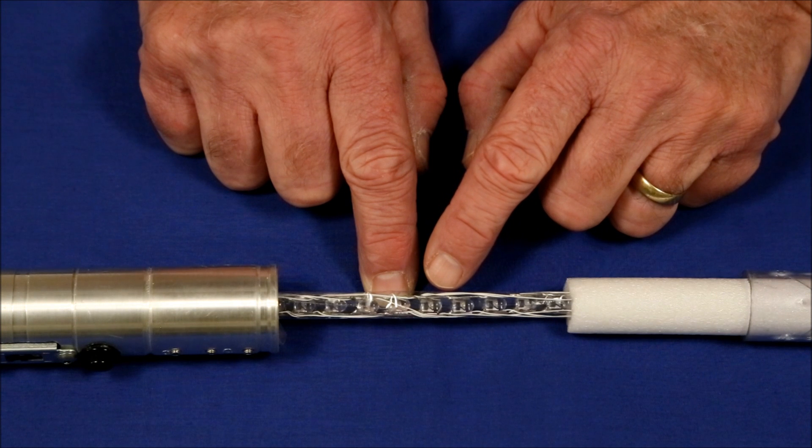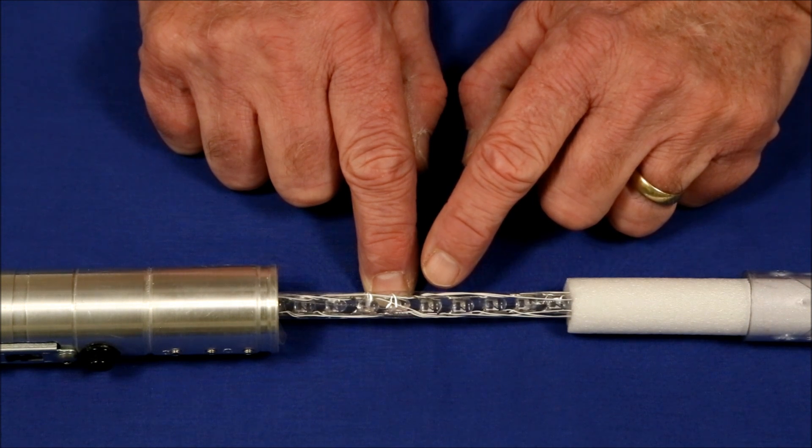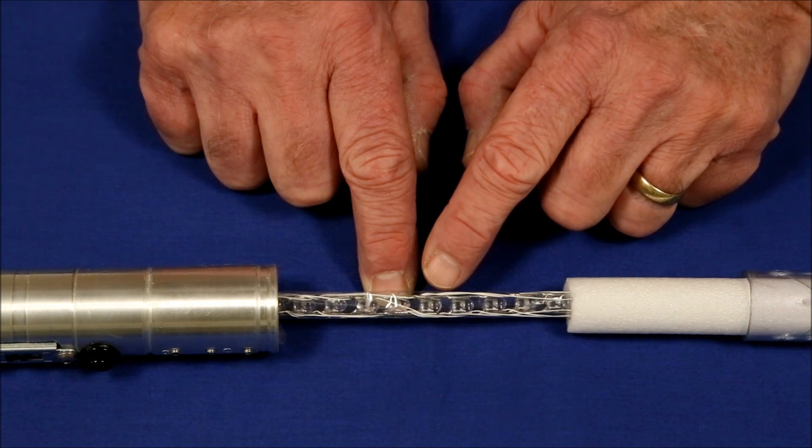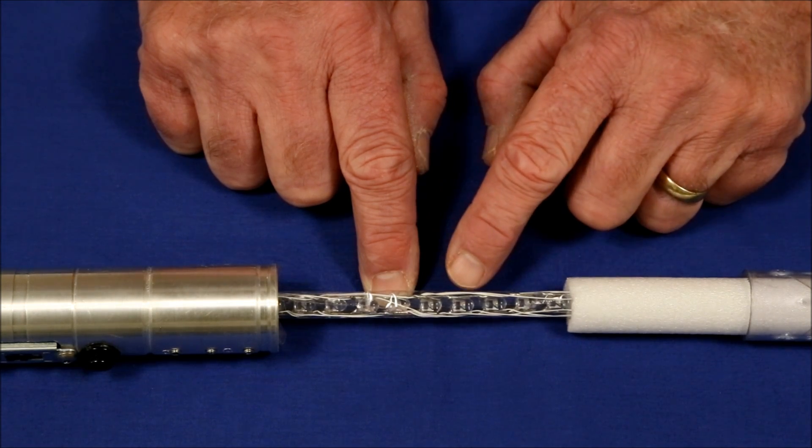Another problem are the wires used to conduct the electricity to each LED. These block, and even though they look white, they're not perfectly reflective, so that's another loss to the light being generated by all the LEDs.